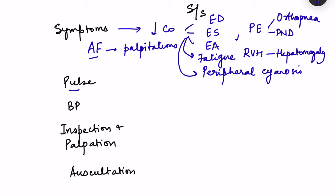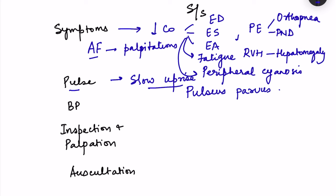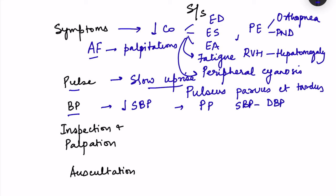On examination, regarding the pulse: palpating the carotid pulse reveals a slow uprise — this is known as pulsus parvus et tardus — due to resistance to blood flow. Regarding blood pressure: initially BP is maintained, but later in the disease systolic blood pressure decreases with development of left heart failure. As cardiac output decreases, systolic BP falls, reducing the pulse pressure (systolic minus diastolic BP).